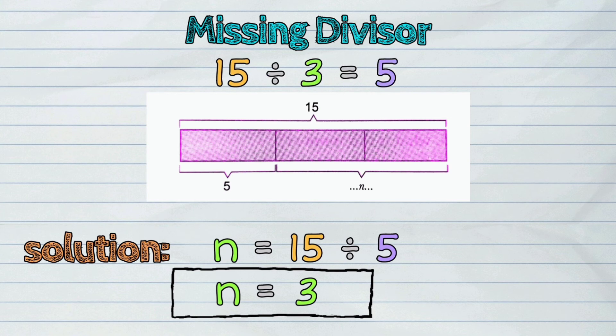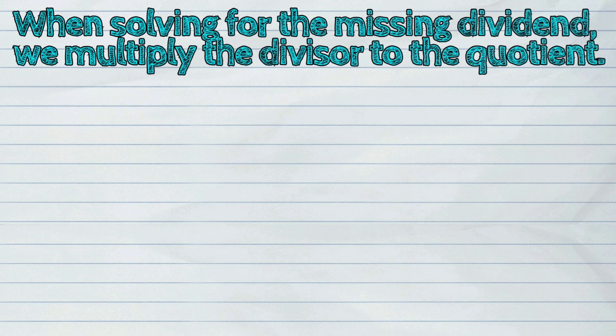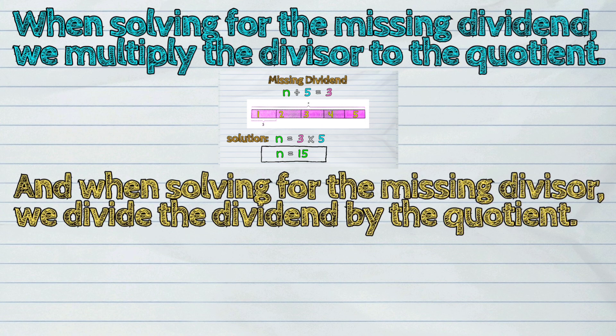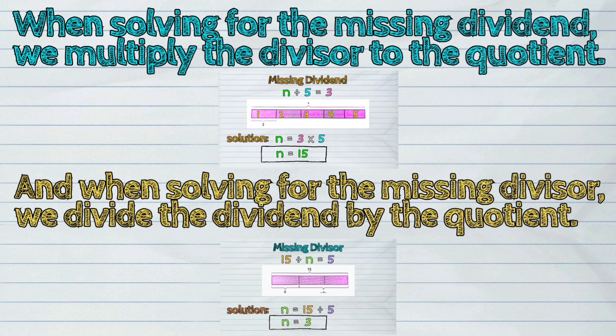Therefore, we can conclude that when solving for the missing dividend, we multiply the divisor to the quotient. And when solving for the missing divisor, we divide the dividend by the quotient.